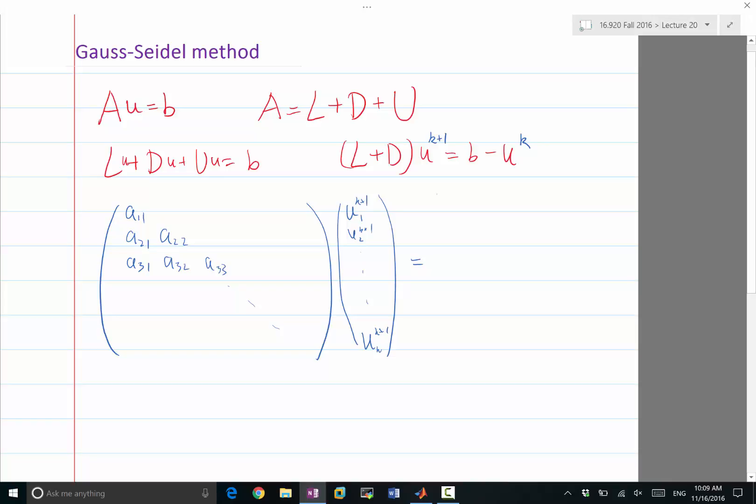So it is equal to b1 minus Uk1, and the right-hand side is completely known, b2 minus Uk2, etc., to bn minus Ukn.